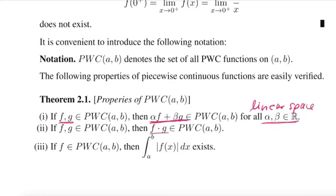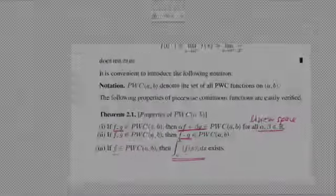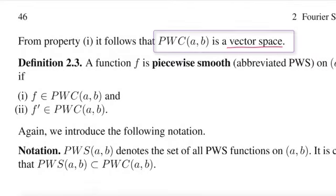Then here we say the product is also piecewise continuous. And furthermore, if f is piecewise continuous, we can integrate it, so the integral does exist. These are wonderful properties, and so mathematically we then would say that this is a vector space.